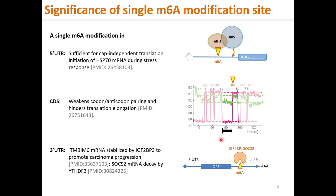YTHDF1 can enhance protein translation in 3'UTR by forming a non-covalent loop with the 5' m7G cap along with polyA binding protein PABP and the translation initiation complex. The M6A sites can be present in the RNA sequence in single, multiple, or clustered formation — more than 70% of the sites are single M6A modification sites. A single M6A site in 5'UTR can recruit translation initiation factor EIF3 and 43S ribosomal subunit to promote cap-independent protein translation, as in the case of HSP70 mRNA translation during heat shock stress response.